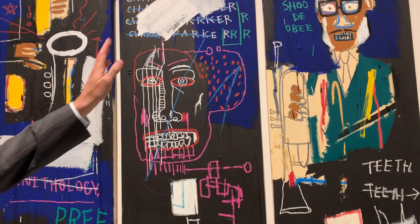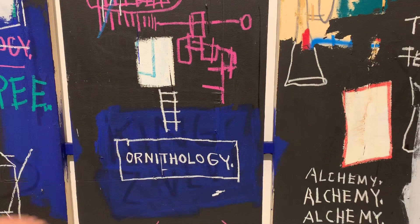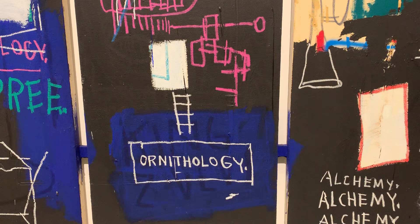Besides Gillespie and Charlie Parker, you also have, and here that's very interesting, you have King Sulu — so Louis Armstrong — also present. And he overpainted it and wrote 'Ornithology' over it. Also the double meaning.